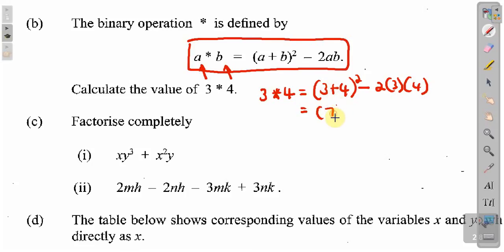And we can evaluate this now. Let's work inside the bracket first. 3 plus 4 is 7. That's 7 square minus 2 times 3 is 6 times 4 is 24.